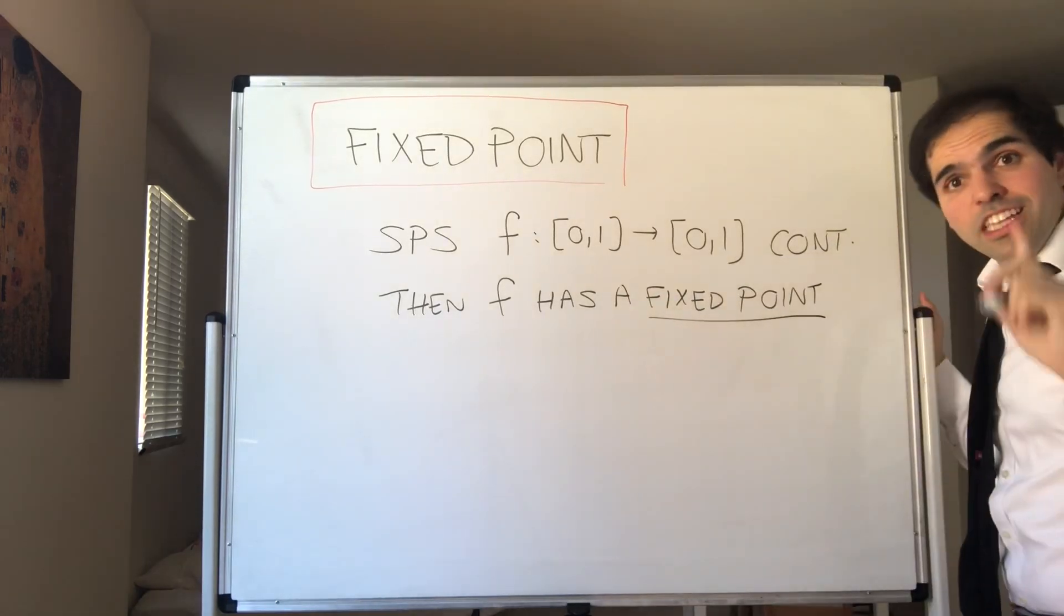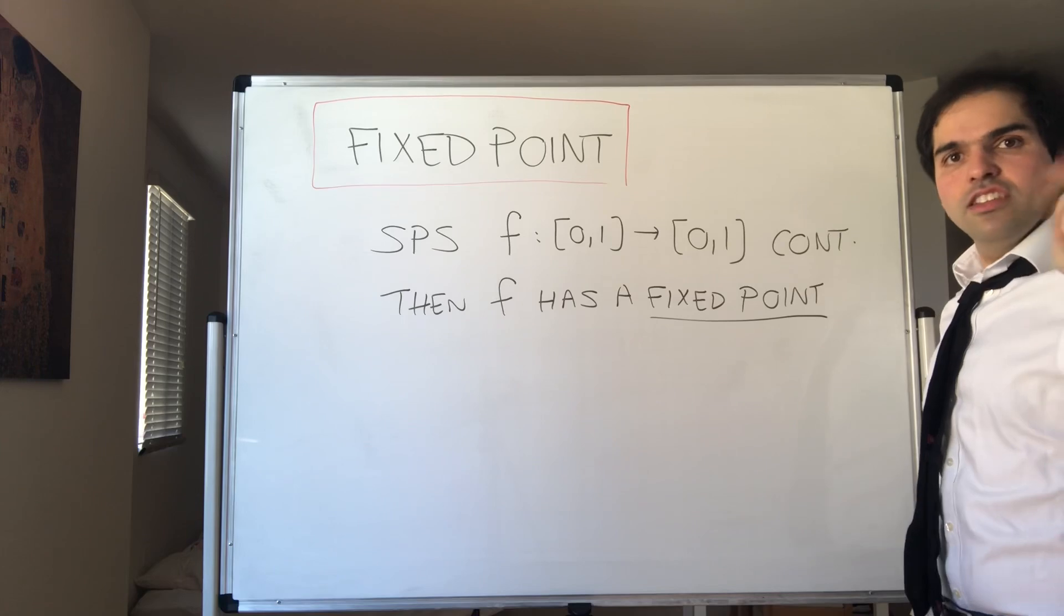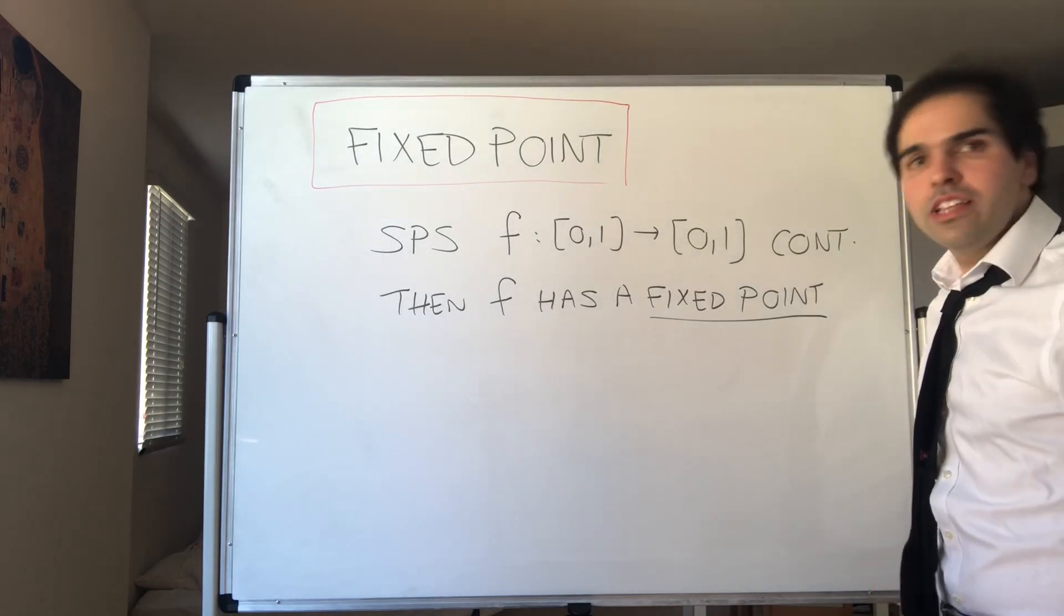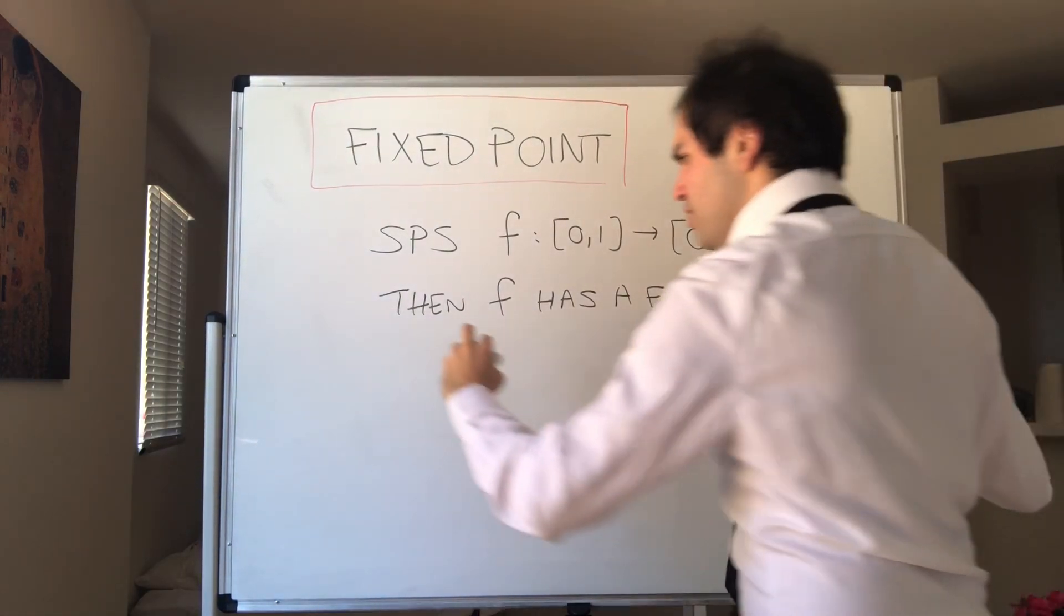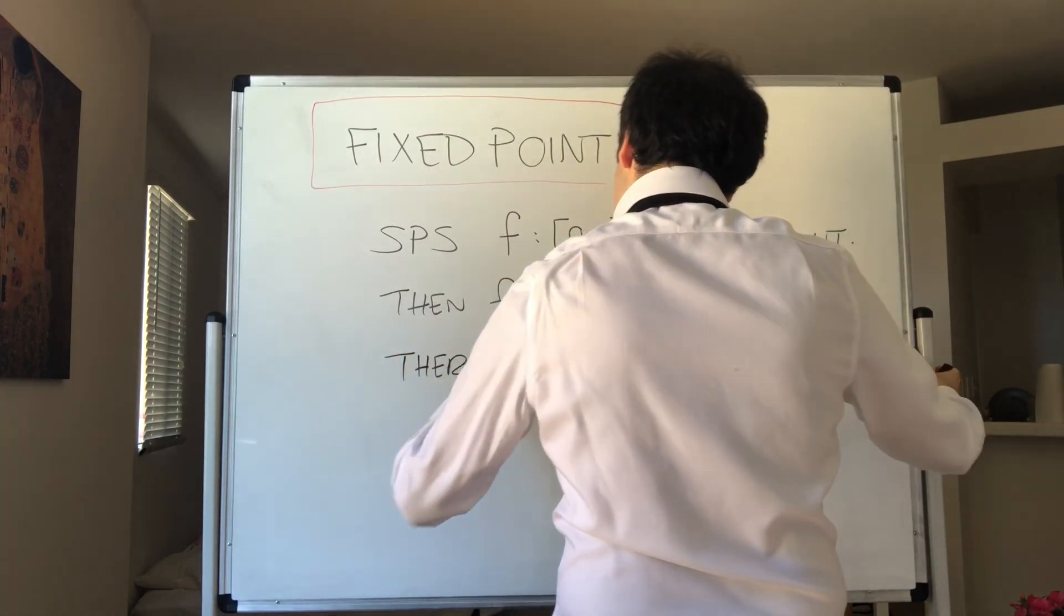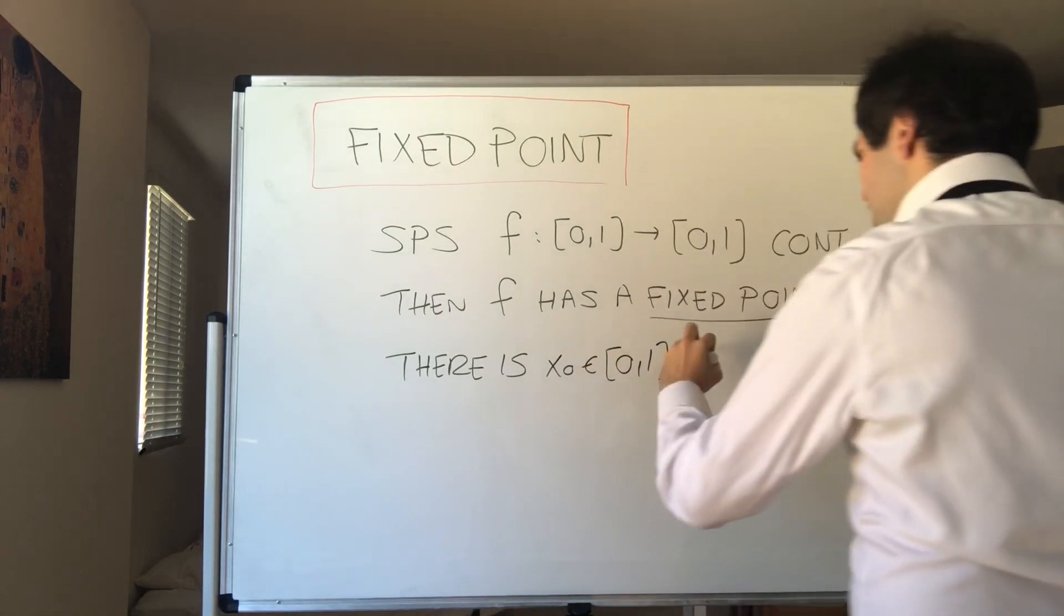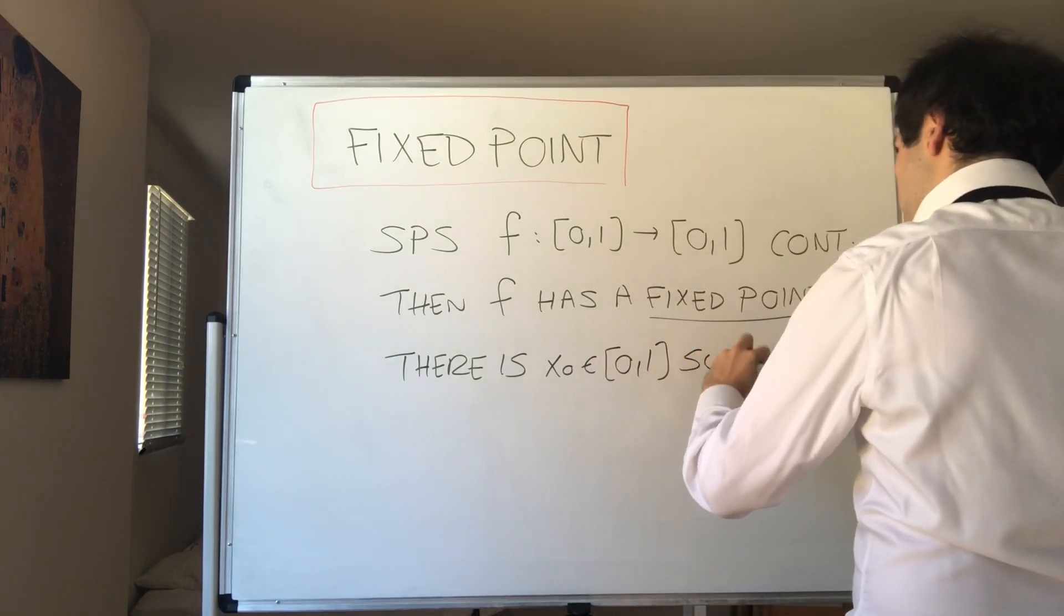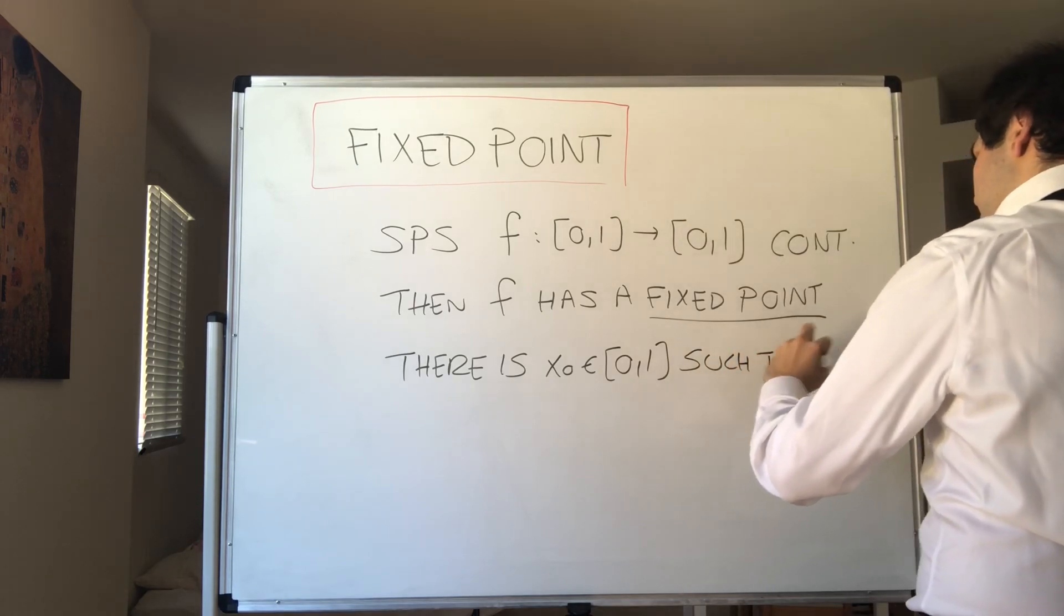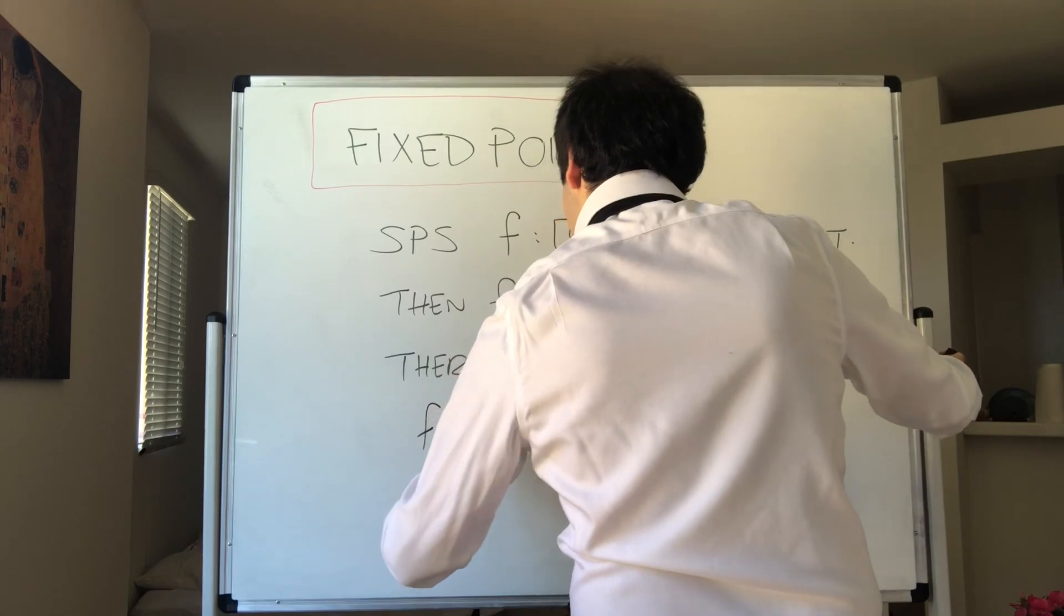What does that mean? It means there is a specific point, think one half, such that if you apply f to it, then nothing happens. So there is x₀ somewhere in the interval [0,1] such that f(x₀) equals x₀.